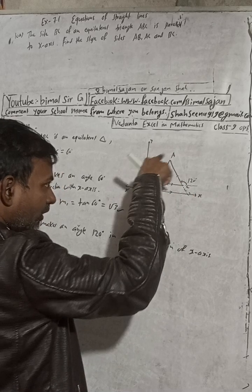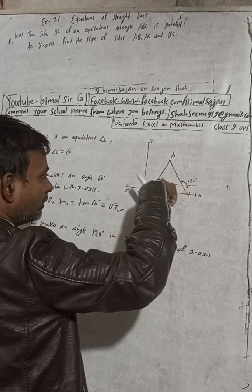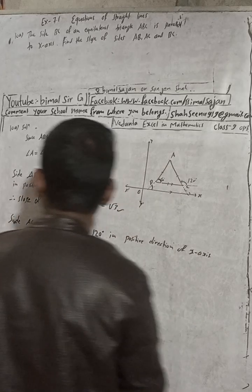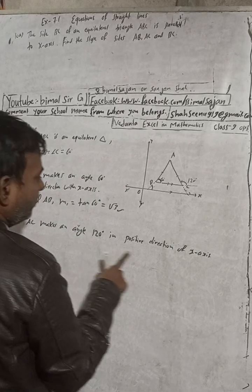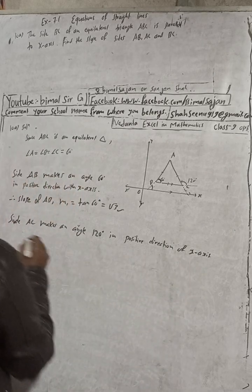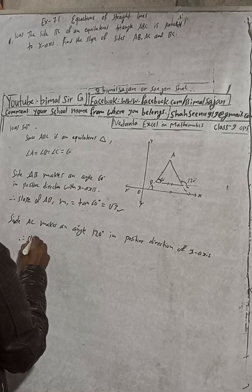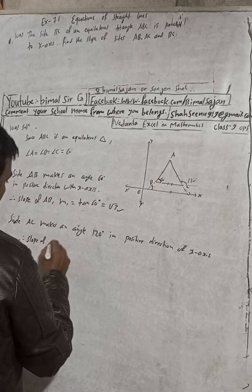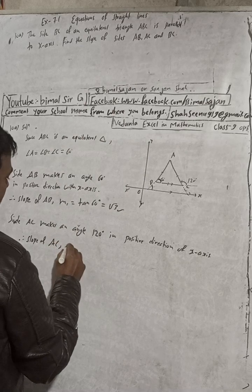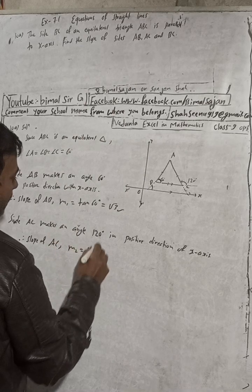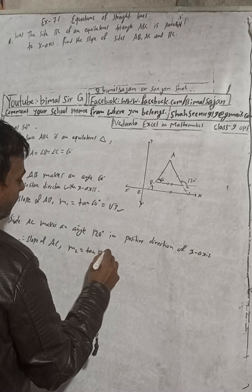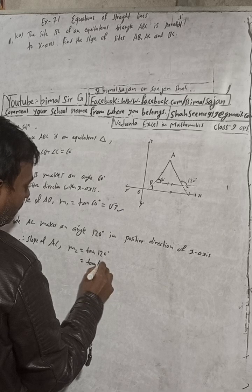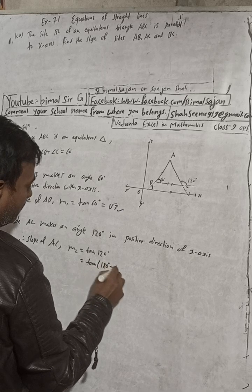We should not take 60 degrees because that is the clockwise direction, which is the negative direction. So side AC makes an angle of 120 degrees in the positive direction of the x-axis. Therefore, slope of AC, m2, is equal to tan(120°), which can be written as tan(180° − 60°).